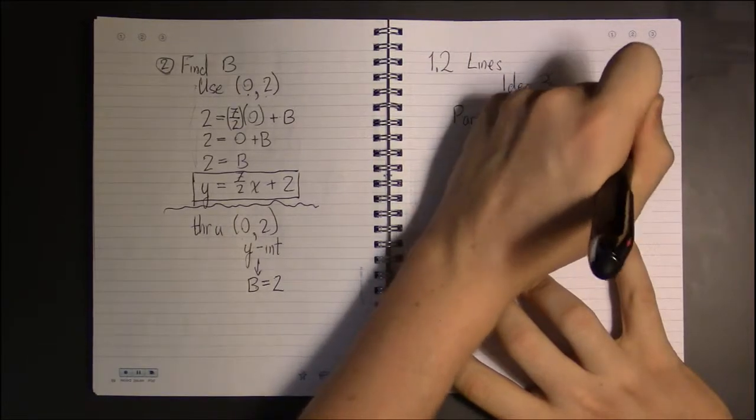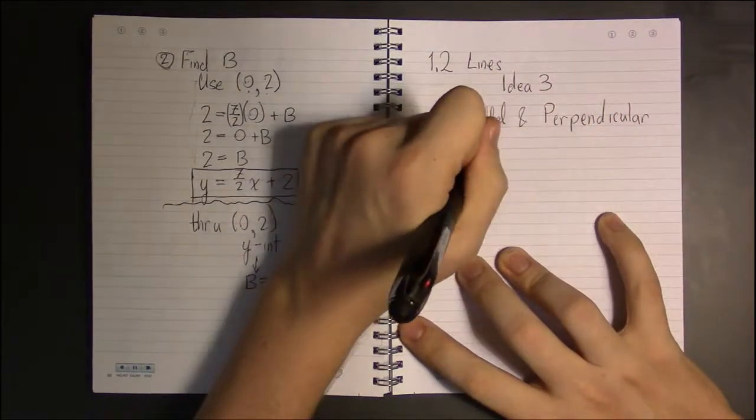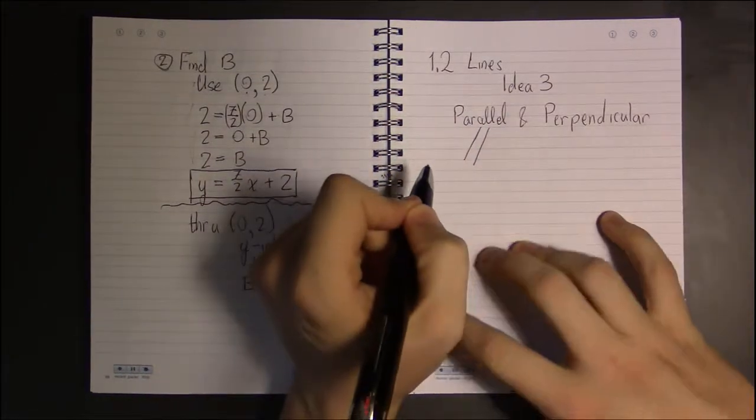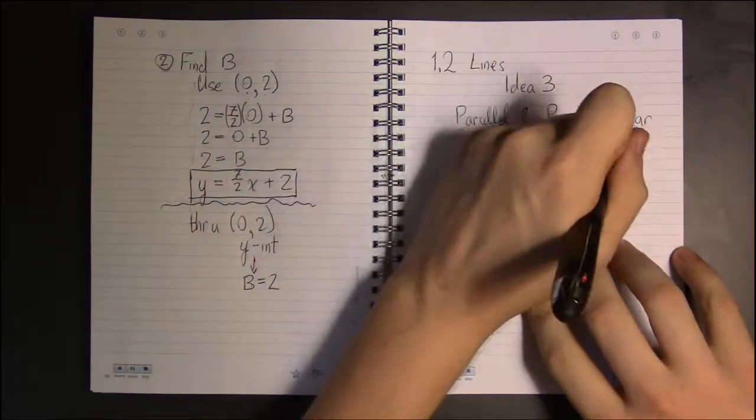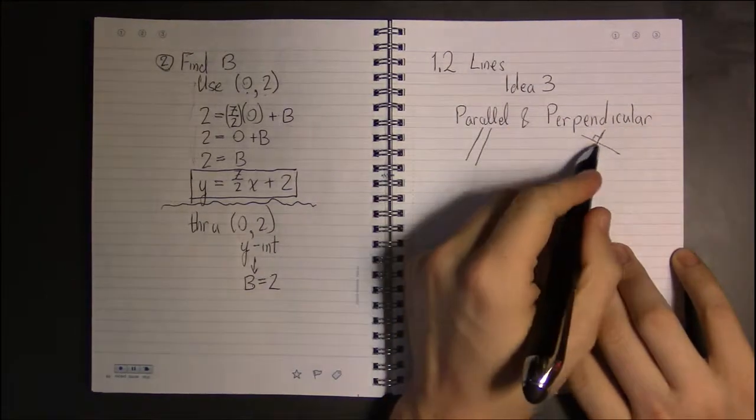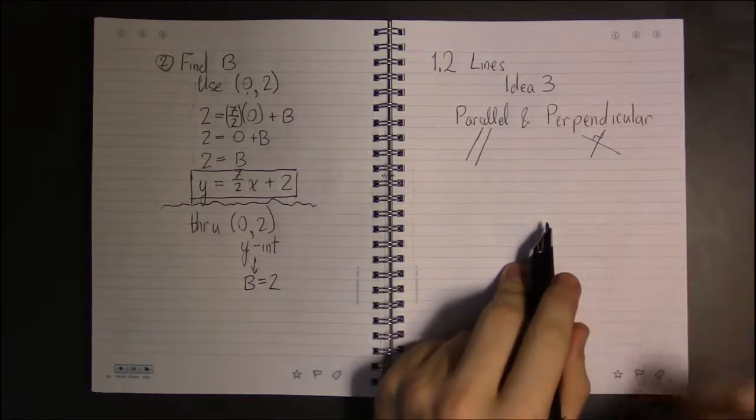So with parallel lines, those are just two lines that never intersect. With perpendicular lines, that's a pair of lines that intersect in a right angle.